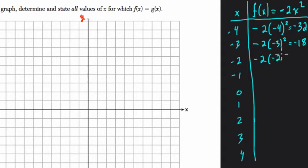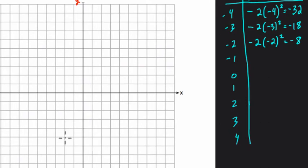If I plug in negative 2, I have negative 2 squared, which is 4, times negative 2 is negative 8. That'll fit. So that's our first point. Negative 2, negative 8. Counting down: negative 1, 2, 3, 4, 5, 6, 7, 8 here. That's our first point.